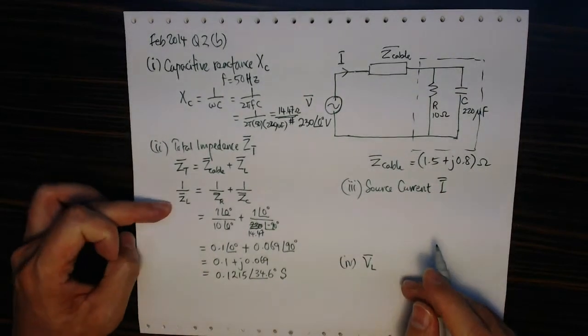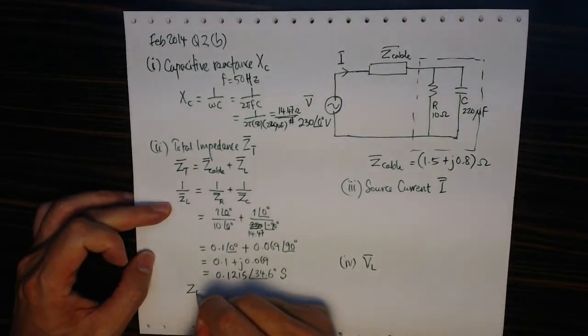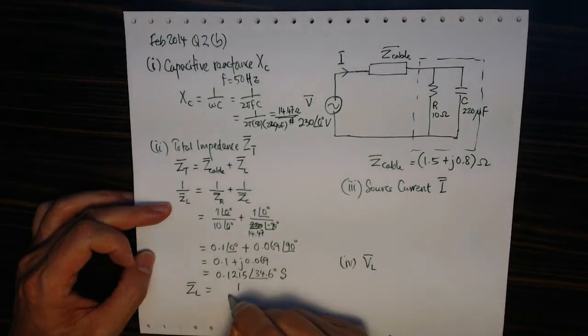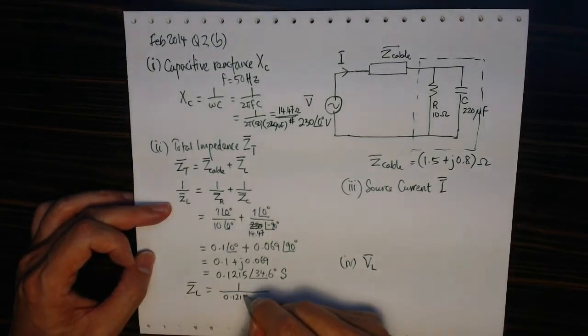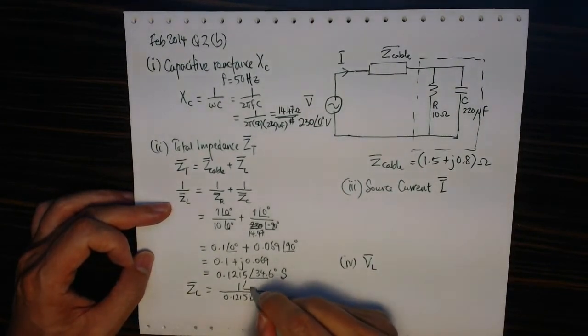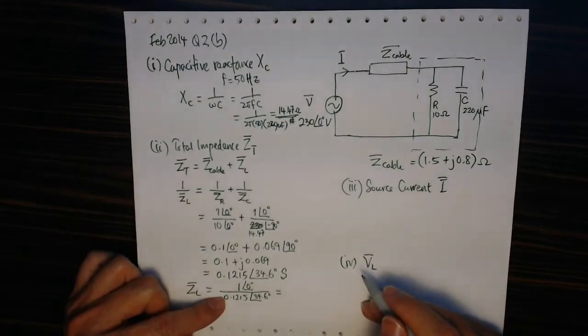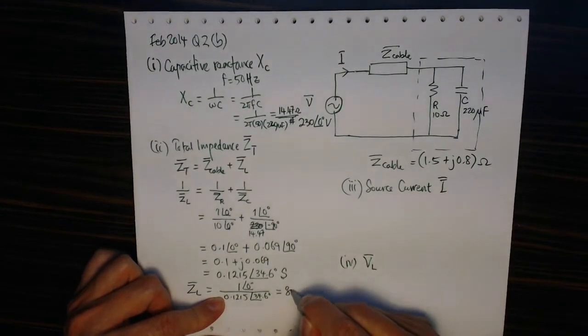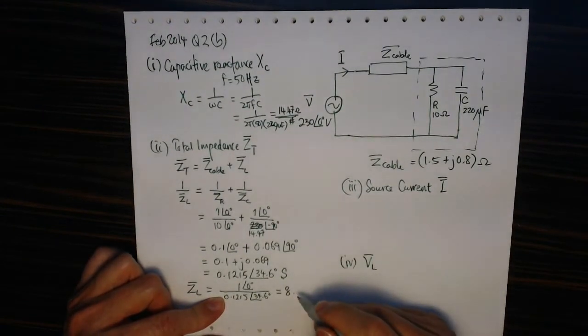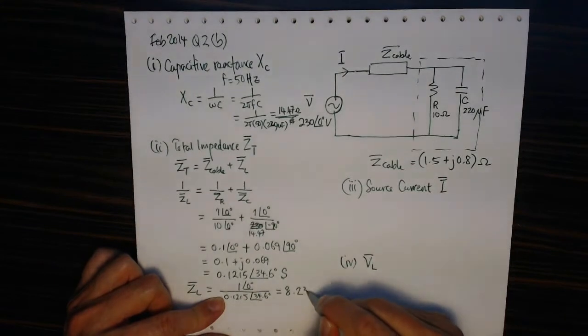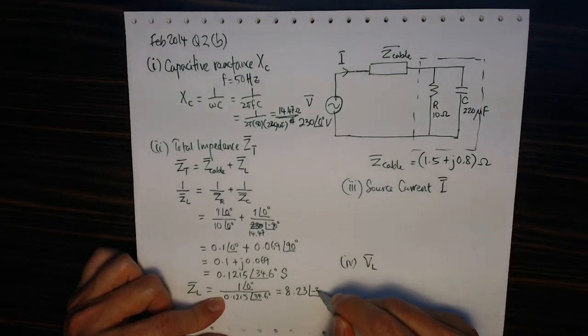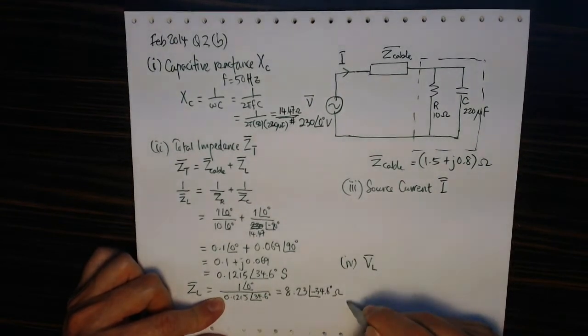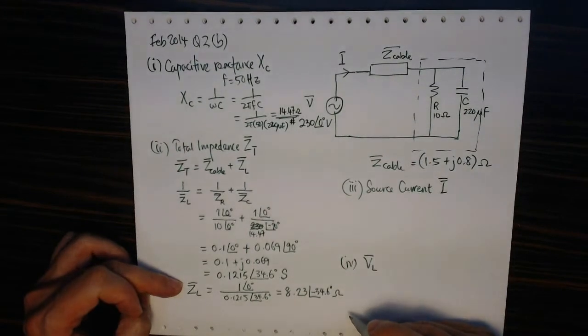Now this is 1 upon ZL, therefore ZL must be equal to 1 upon this. So 1 upon 0.1215 angle 34.6 degrees. This gives me a final load of 8.23 at the angle of minus 34.6 degrees. So that is the load impedance.